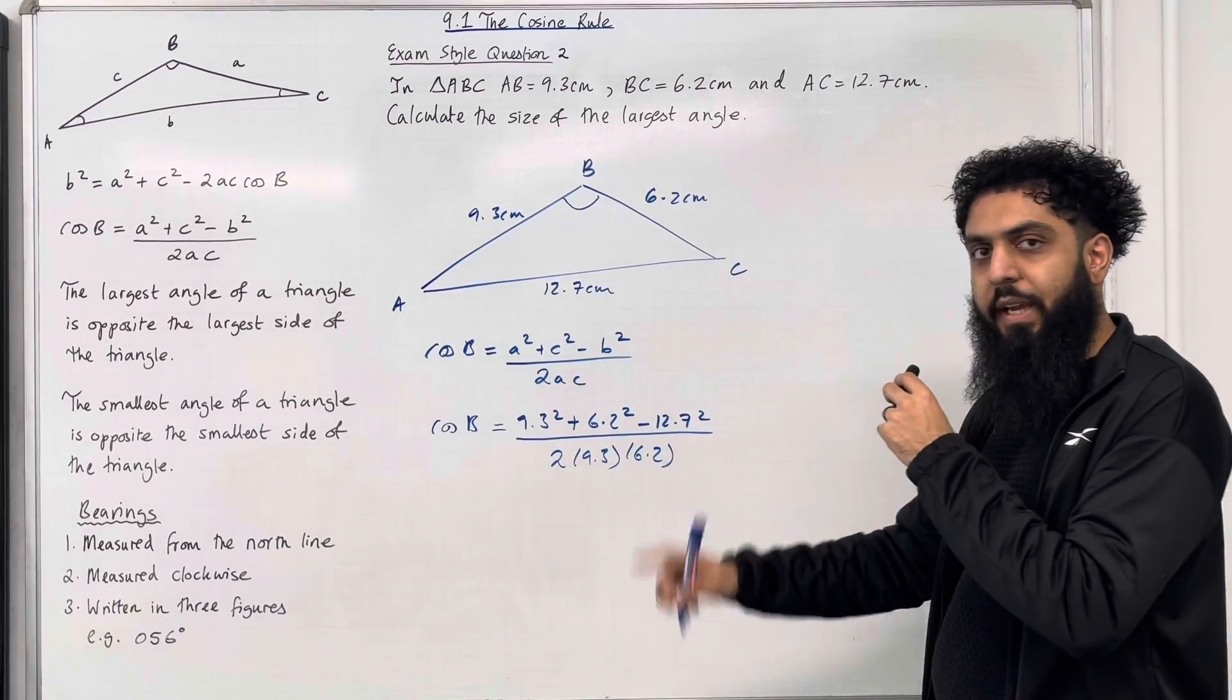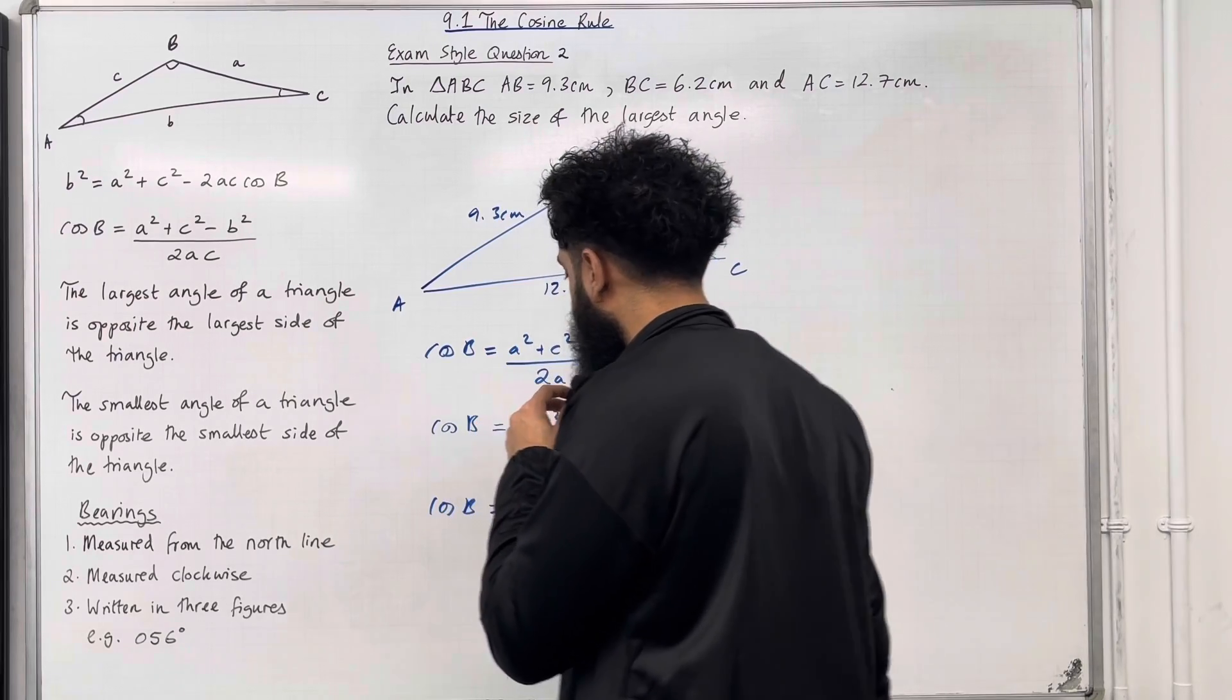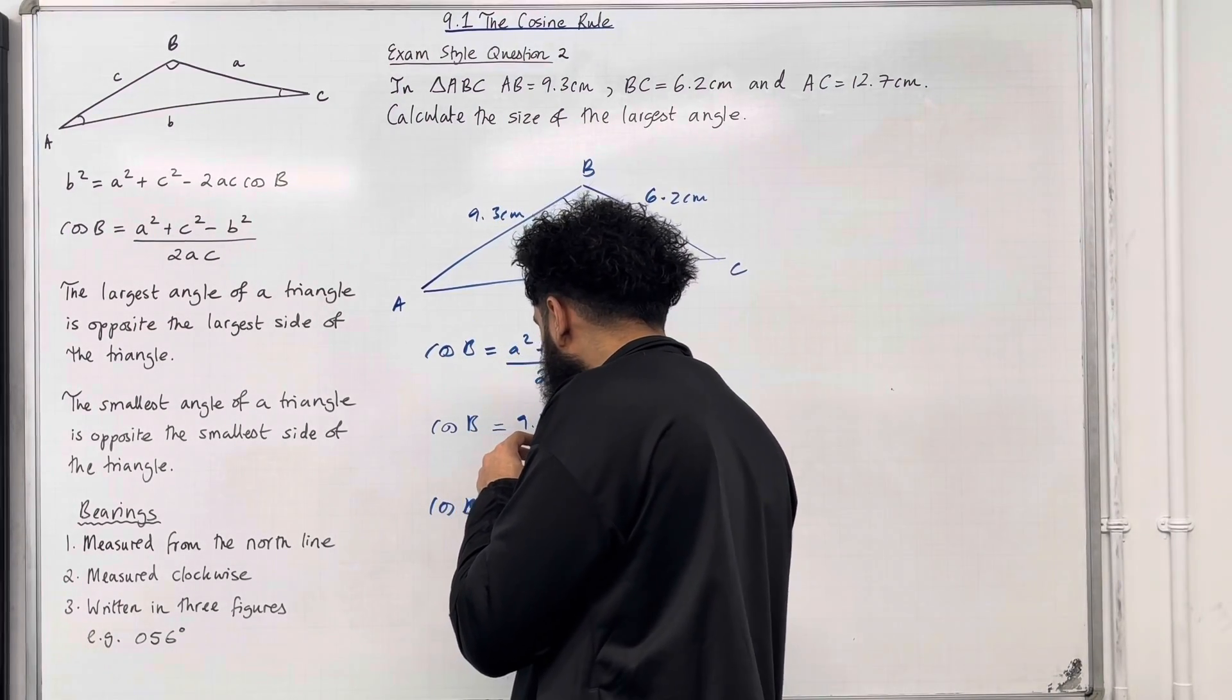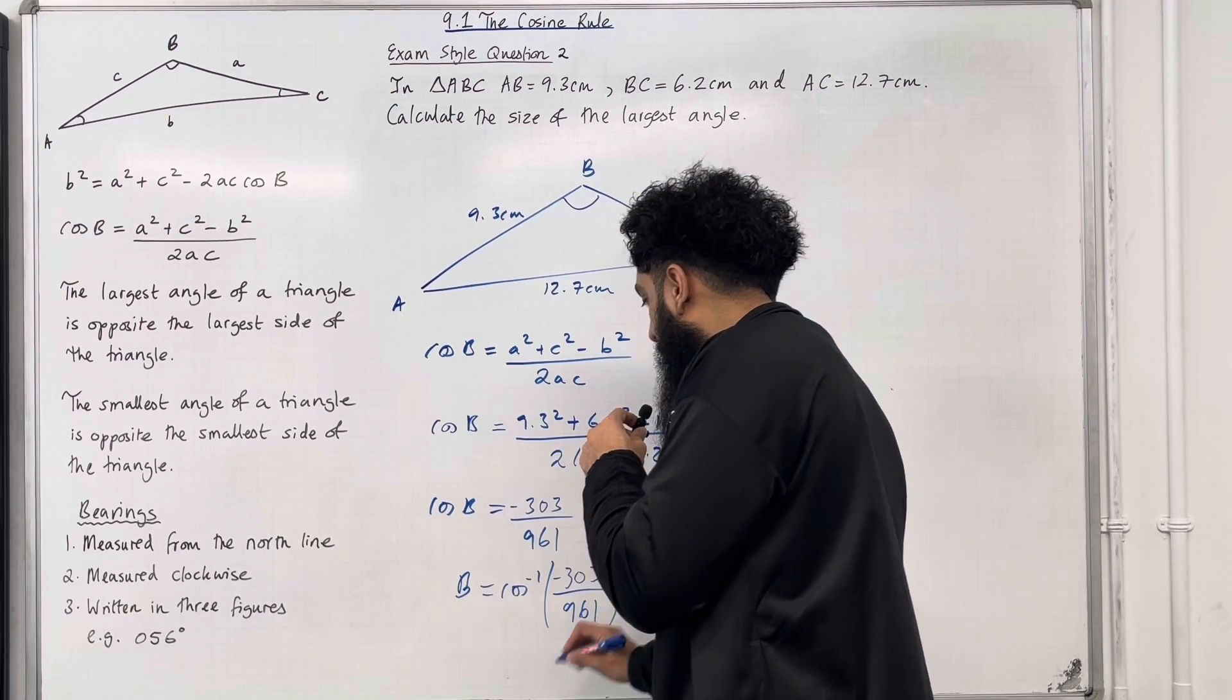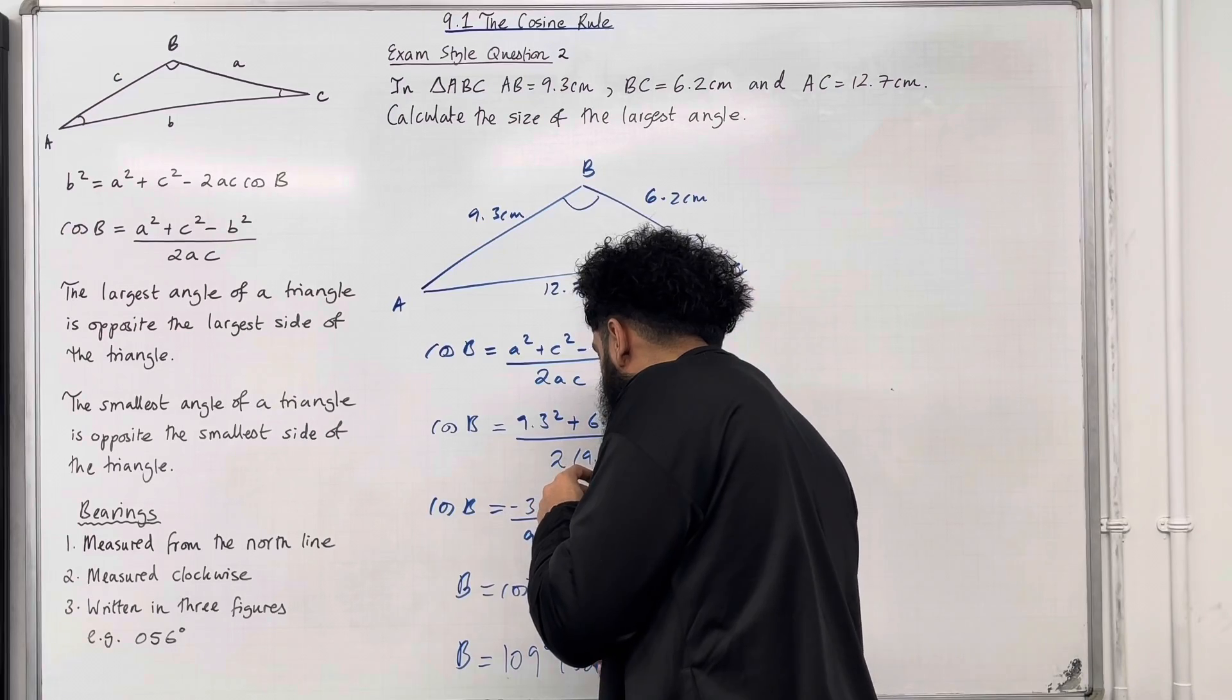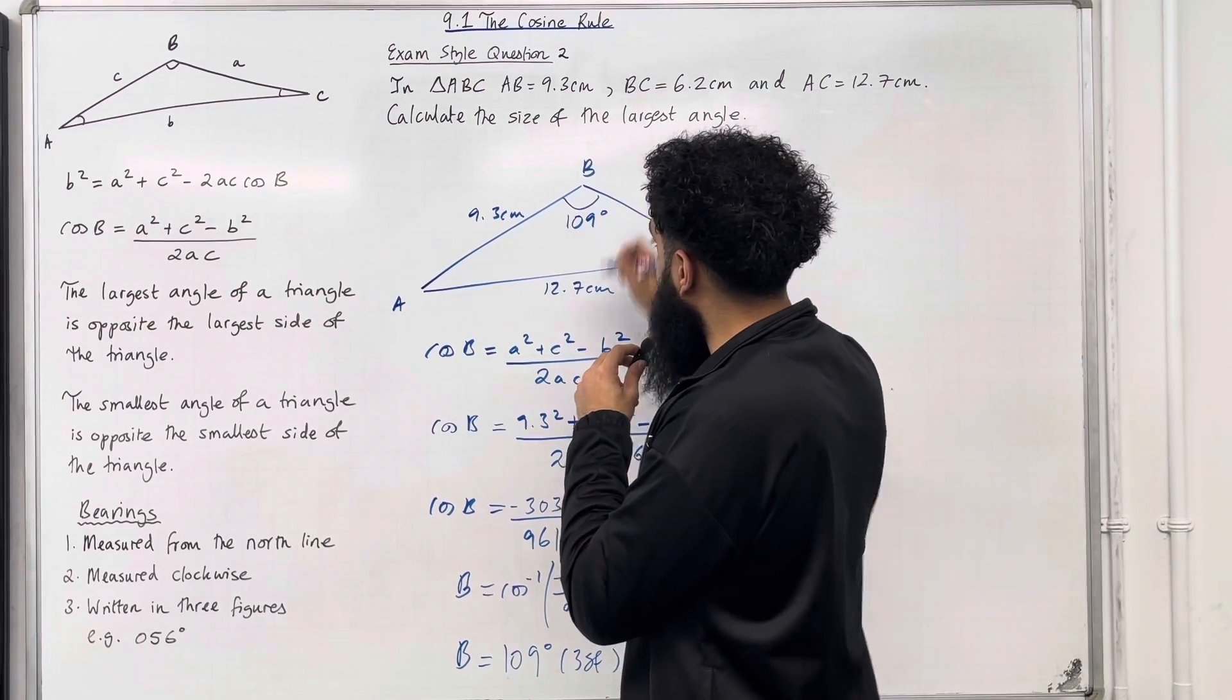So I can put the right-hand side into my calculator. I get cos B equals minus 303 over 961. So now I can take cos inverse to work out the angle B. So the angle B equals cos inverse of minus 303 over 961. To three significant figures, we get that the angle B equals 109 degrees. So that there, ladies and gents, is the largest angle of the triangle ABC. We can label it over here, 109 degrees.